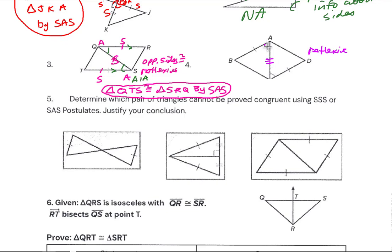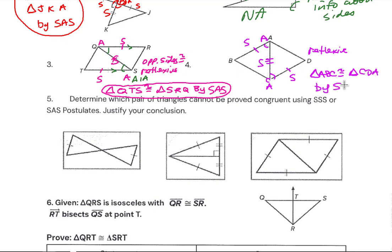Looking at the next one, we've got a shared side that is congruent to itself by the reflexive property. We have the two angles, and those other two sides are marked as congruent, so that also gives us a Side-Angle-Side pattern. We need to make sure we name the congruence in the correct order: A goes with C, B with D, and C goes with A.